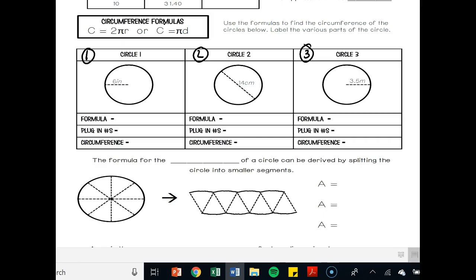For circle number one, notice here, I have a radius, a radius of 6. It only goes halfway across the circle. So the formula that I'm going to use is c is equal to 2 pi r. Now I'm going to plug in the numbers that I know. So c is equal to 2 times 3.14, that stands for pi, times my radius, times 6. My circumference is then equal to 37.68 after I multiplied those three numbers.